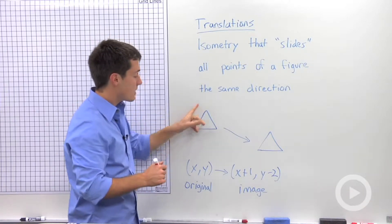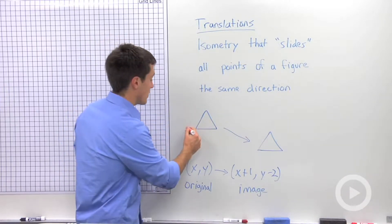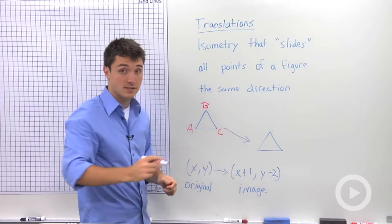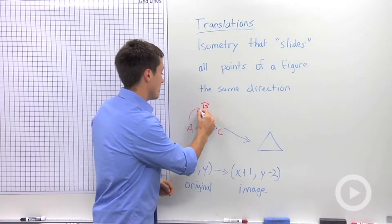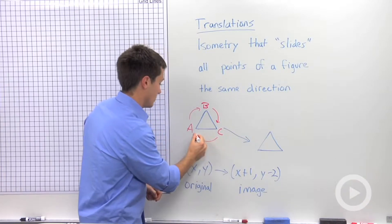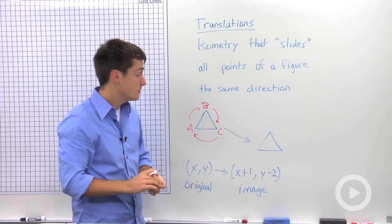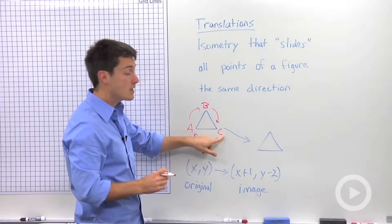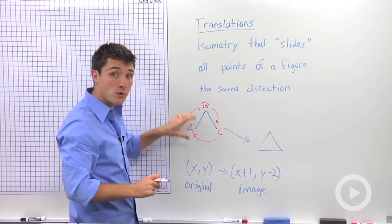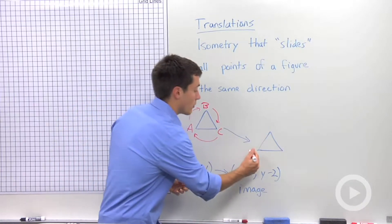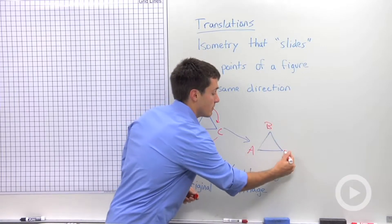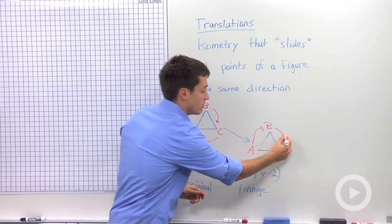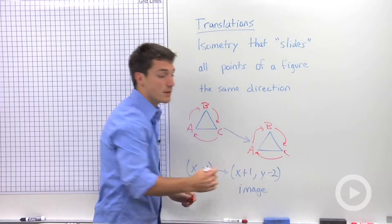Let's say I gave names to my three vertices in this triangle. Let's call this A, B, and C. Notice, if I go in a clockwise direction, after A follows B, after B follows C, after C follows A. When I translate this, that orientation is going to stay the same. We're still going to have A then B, B then C, and C then A.